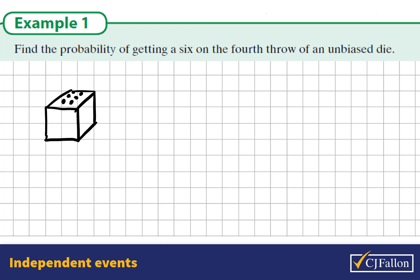So the probability of getting a 6 on any given throw, just the normal probability of getting a 6, is 1 out of 6.